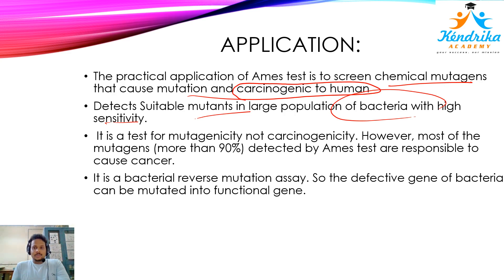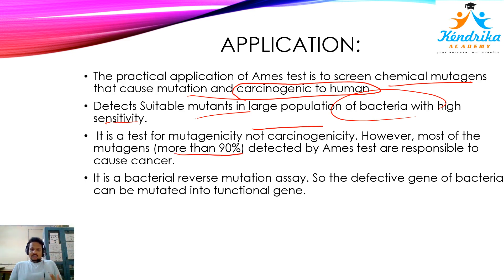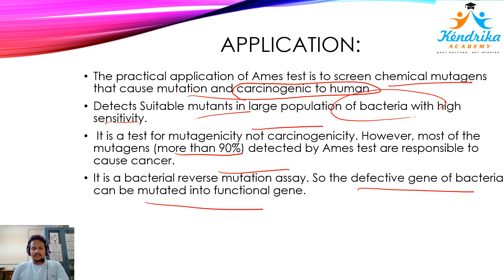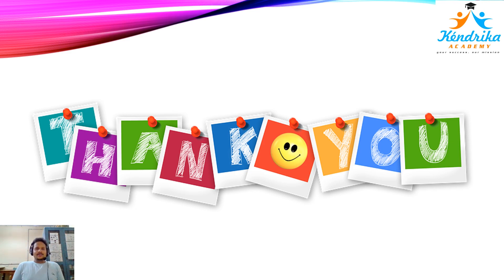It is very sensitive and useful for this experiment. The Ames test tests mutagenicity, not carcinogenicity directly. However, since most mutagens are carcinogens, if you find that a particular chemical is a mutagen, it doesn't necessarily mean it causes cancer, but most mutagens are carcinogens, so we can take precautions with that chemical. It is a bacterial reverse mutation assay — the defective gene of the bacteria can be mutated into a functional gene. Thank you and have a good day.